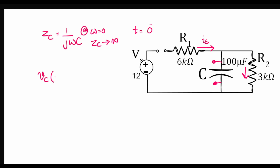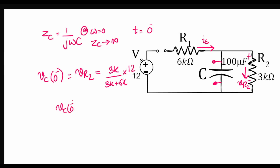We are interested in finding the charge stored on the capacitor at t equal to 0 minus. The voltage across resistor R2, with polarity VR2, is equal to the charge stored across the capacitor. We can find this using voltage division: VR2 equals 3k divided by (3k + 6k) times the supply voltage of 12V, giving us the initial charge stored on the capacitor as 4 volts.